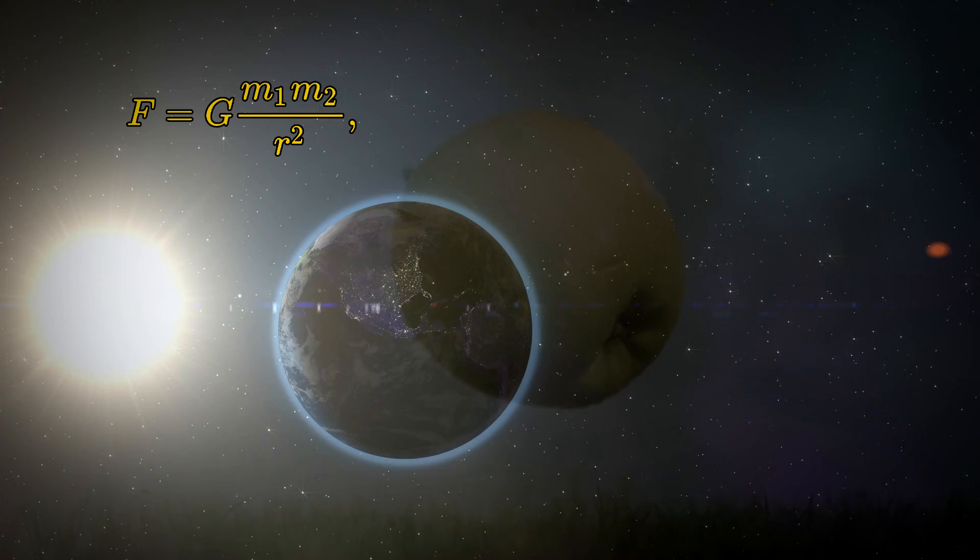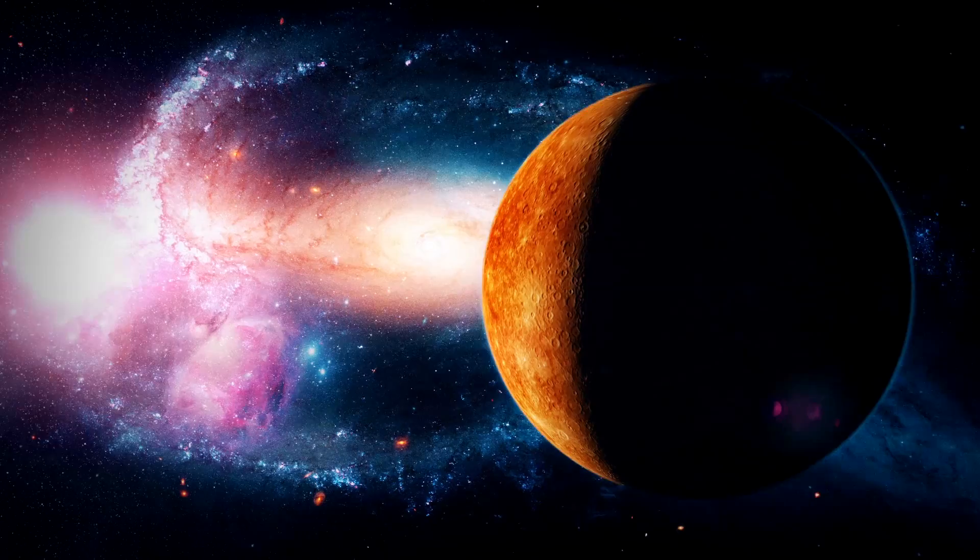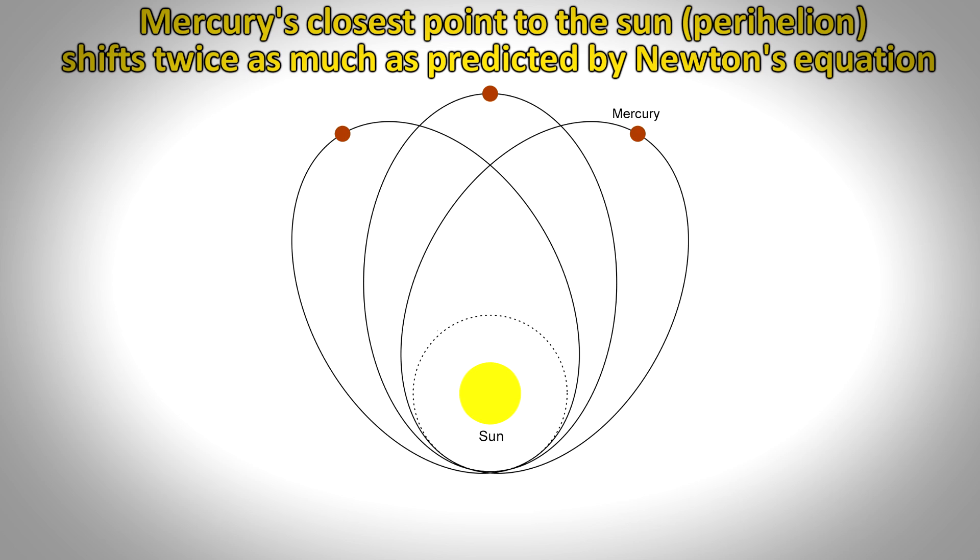Newton's equation was considered gospel for hundreds of years. However, it was noticed that Newton's equation did not quite predict the observed motion of the planet Mercury, the planet closest to the sun. Mercury has something called a precession. This means that its elliptical orbit around the sun varies slightly every time it goes around the sun. And this shift in orbit was much more severe than predicted by Newton's laws. No one could explain it.